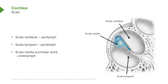The scala media is also referred to as the cochlear duct. The cochlear duct has a specialized fluid called endolymph, while the scala vestibuli and the scala tympani have extracellular fluid termed perilymph.